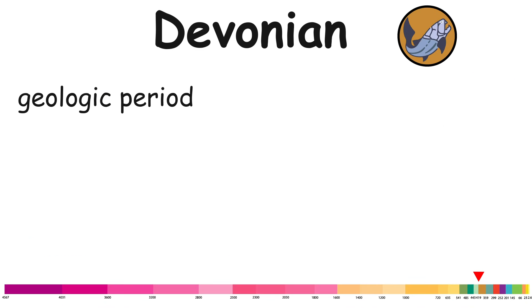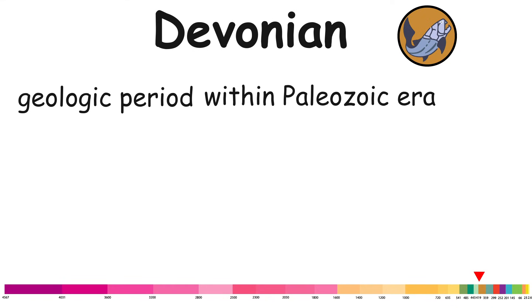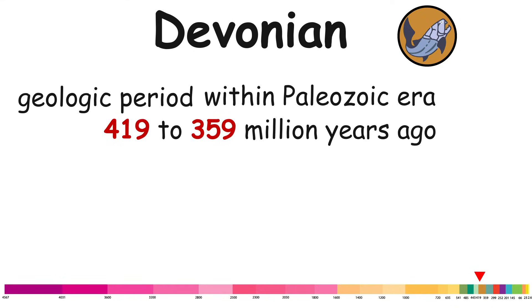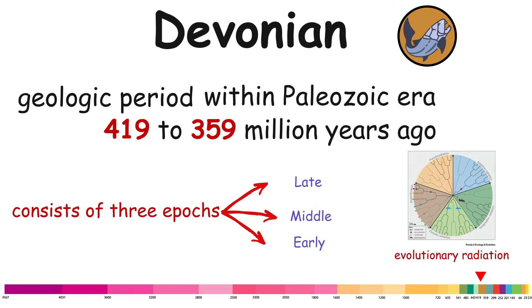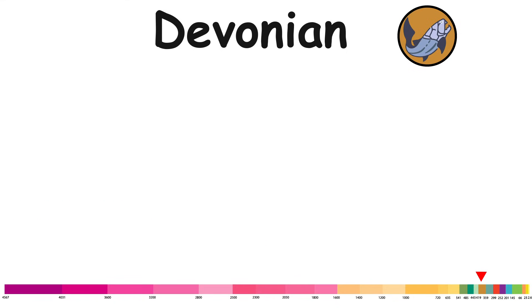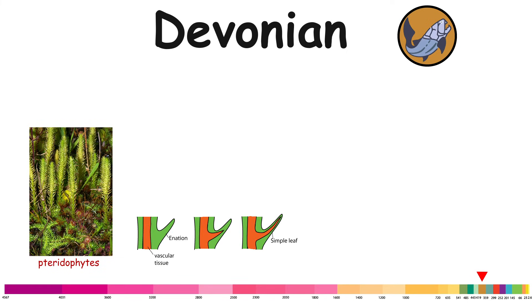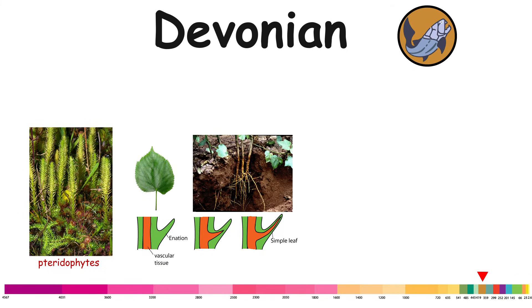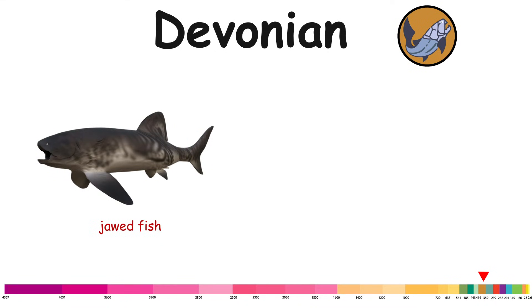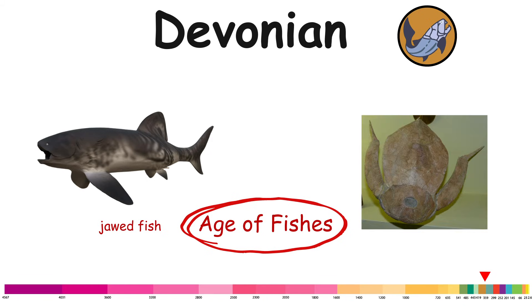Devonian. The Devonian is a geologic period within the Paleozoic era, spanning approximately from 419 to 359 million years ago. It consists of three epochs: Late, Middle, and Early. The first significant evolutionary radiation of life on land occurred during the Devonian with free-sporing land plants, pteridophytes. By the middle of the Devonian, several groups of vascular plants had evolved leaves and true roots, and by the end of the period the first seed-bearing plants, pteridosperms, appeared. Fishes, especially jawed fish, reached great diversity, leading the Devonian to be dubbed the Age of Fishes. The armored placoderms began dominating almost every known aquatic environment.